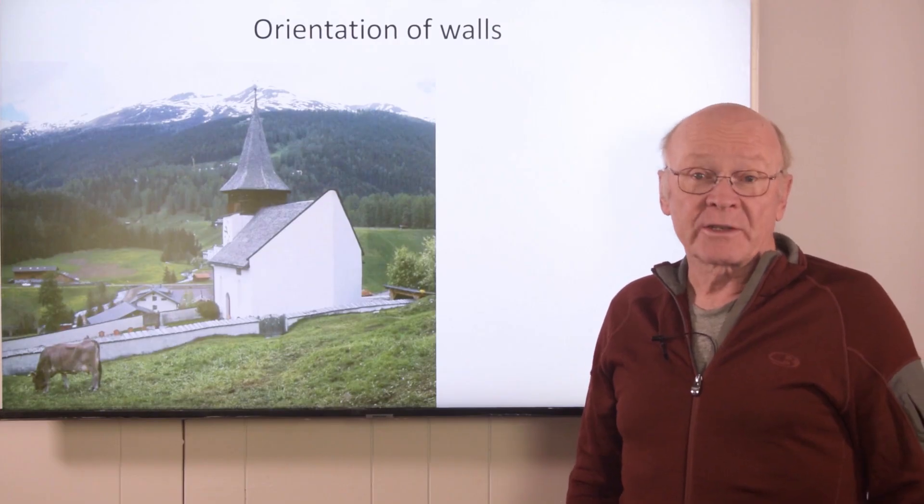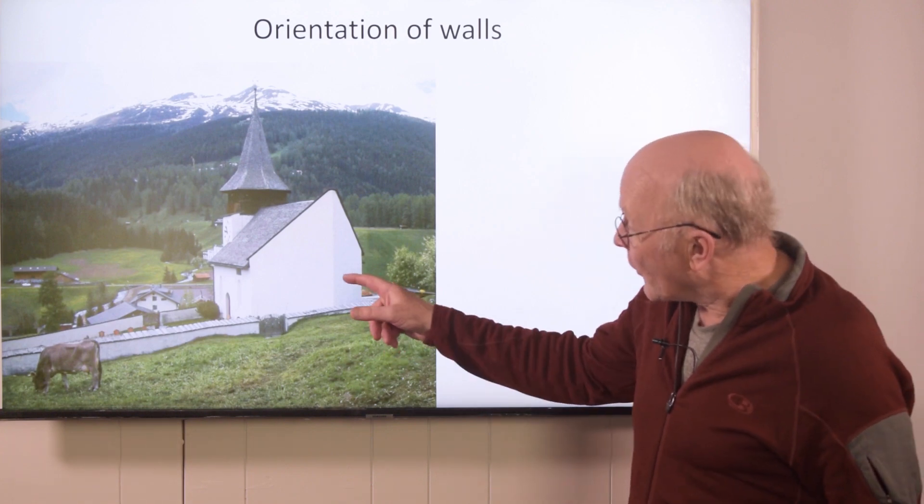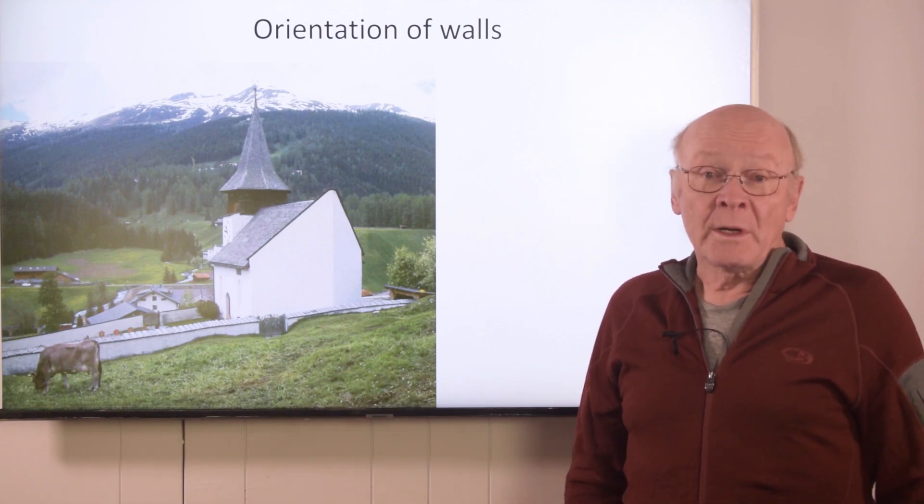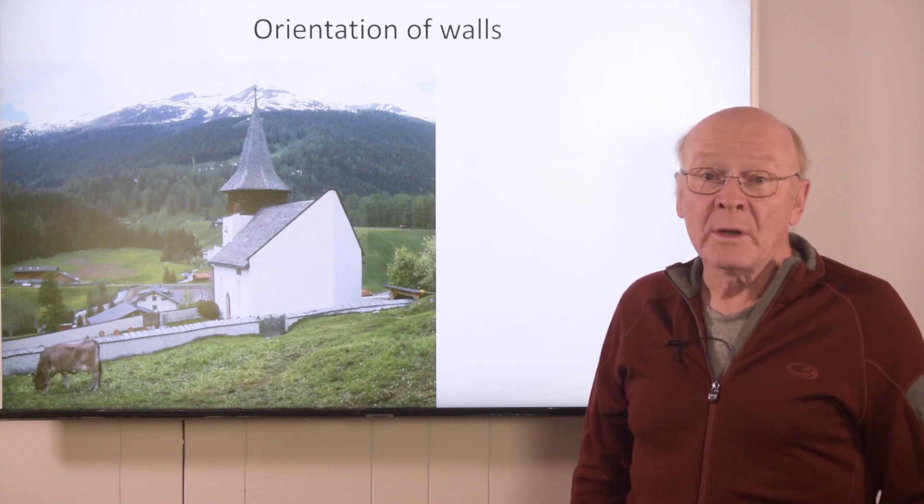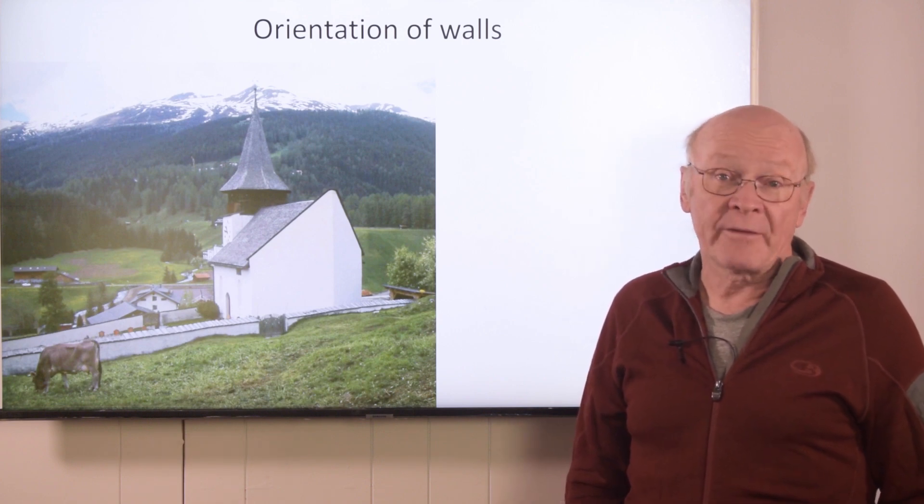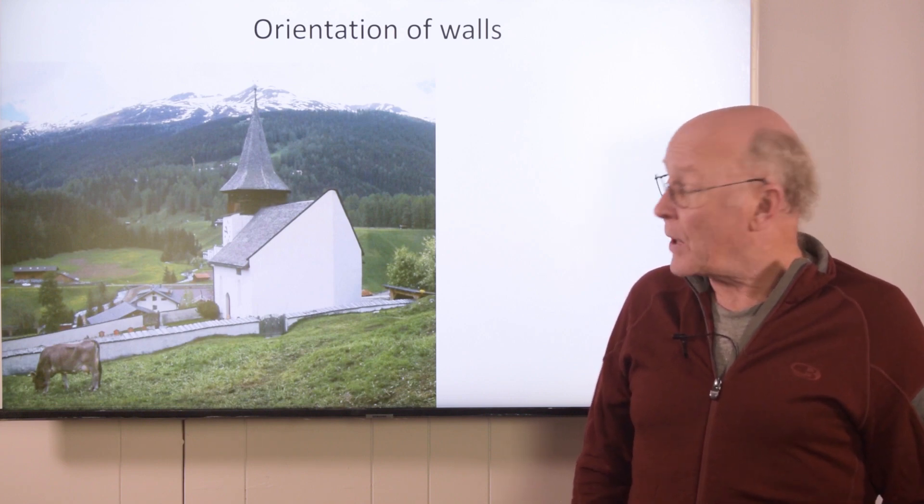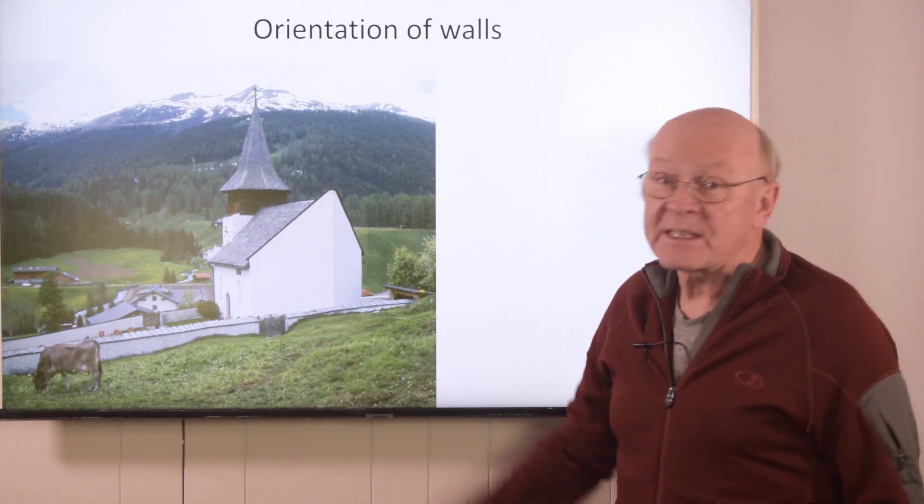The avalanche impact on a structure also depends in part on the orientation of walls. The walls of this Swiss church are oriented to reduce the impact pressure. For a wall at 45 degrees to the flow direction, which is more angle than is shown in this photo, the impact pressure is about half what it would be on a wall perpendicular to the flow. Not surprisingly, there would also be friction on the walls from an avalanche sliding against them.